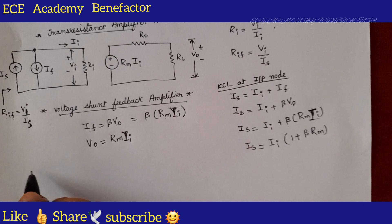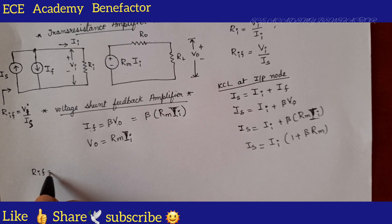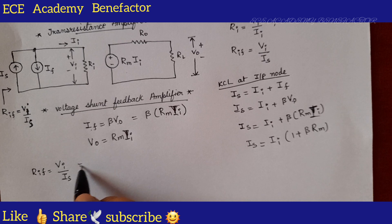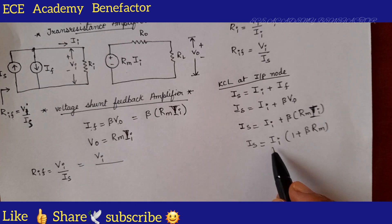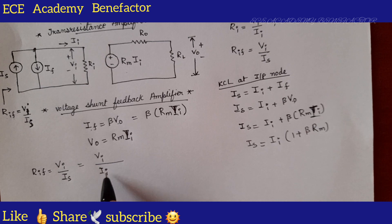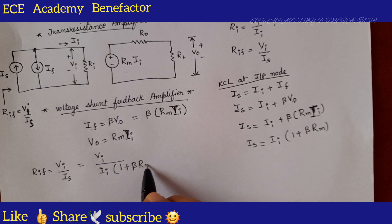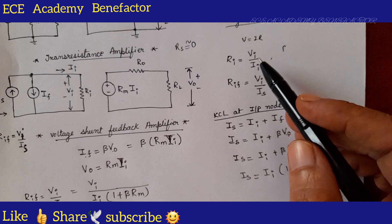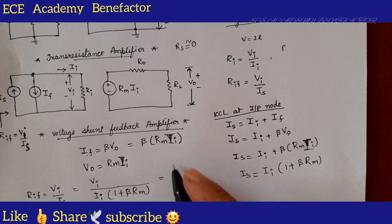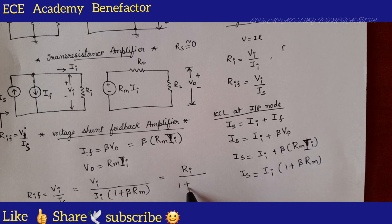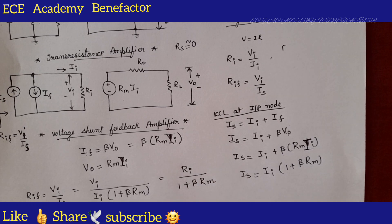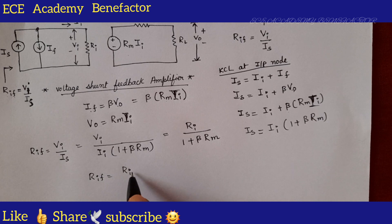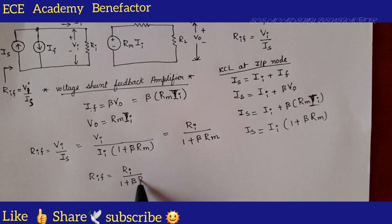R-IF is defined as V-i divided by I-s. We have I-s equals I-i times (1 plus beta R-m), so V-i by I-s equals V-i by I-i divided by (1 plus beta R-m). The ratio V-i by I-i is R-i, so we get R-IF equals R-i divided by (1 plus beta R-m). This is the derived equation for R-IF.